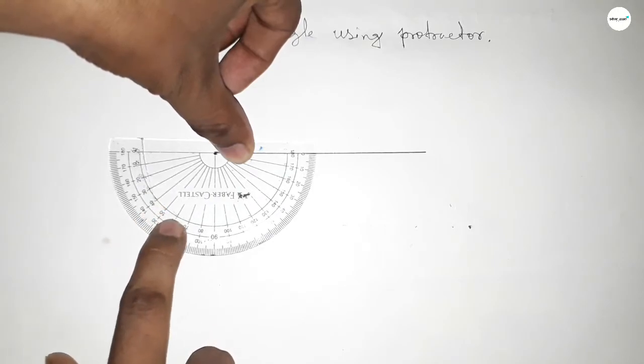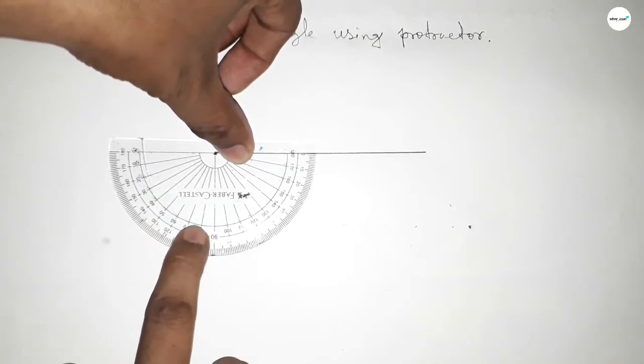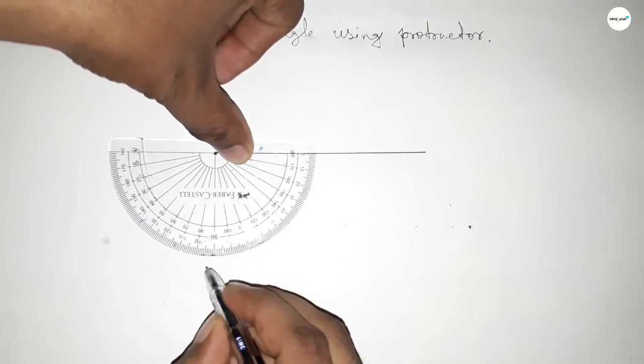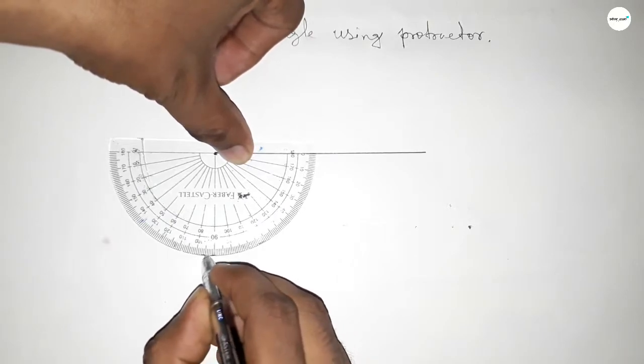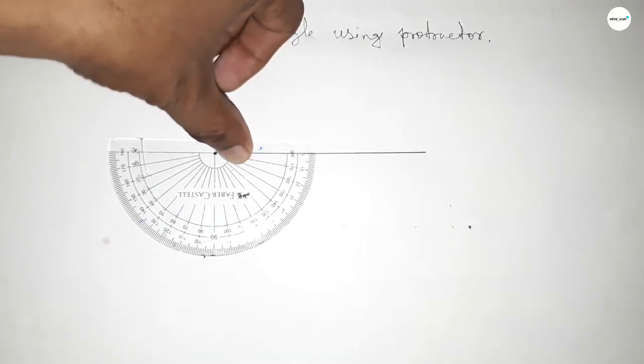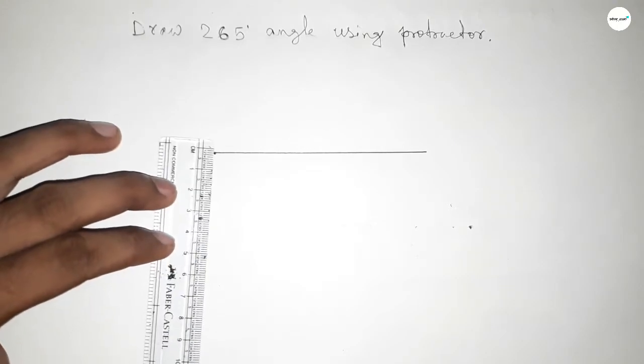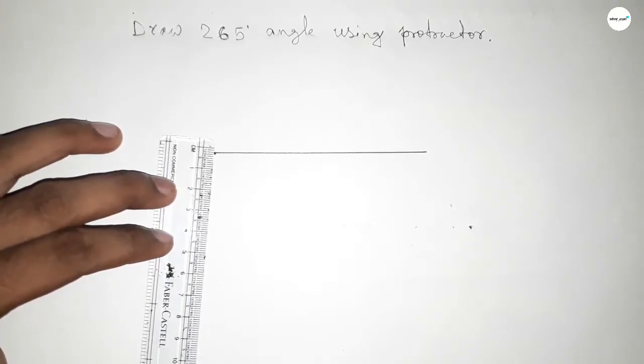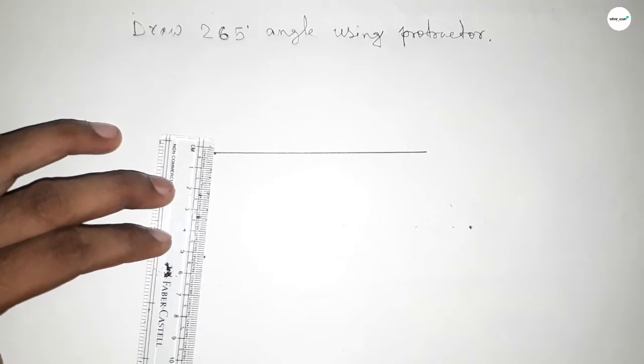50, 60, 70, 80, and this is 85 degrees. Okay, so by adding 85-degree angle with 180, then we can get 265-degree angle.